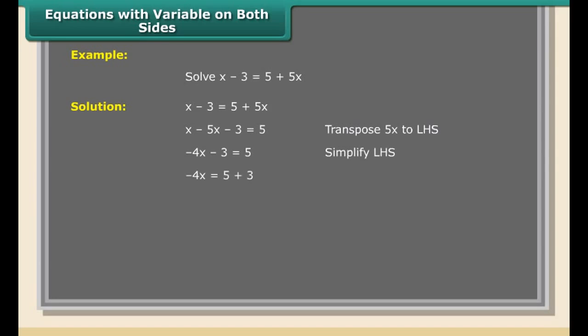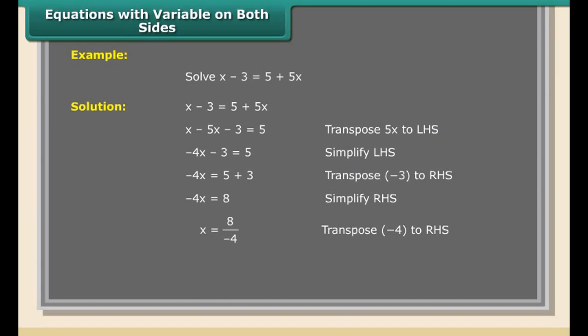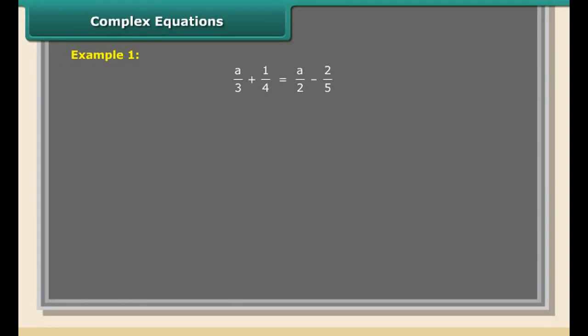Simple equations example: solve 3a − 5 = 16. Solution: 3a − 5 = 16. Transposing −5 to RHS: 3a = 16 + 5 = 21. Transposing 3 to RHS: a = 21/3 = 7.